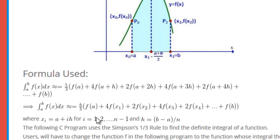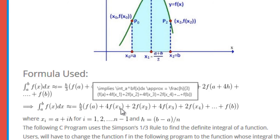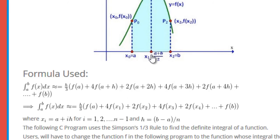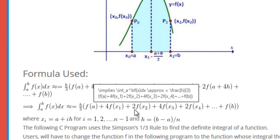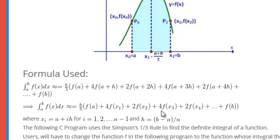Another way to look at this: you have h over 3 multiplied by the value at the lower limit, plus the value at the final limit f of b, plus the values at all subinterval points multiplied by either 4 or 2. The rule for deciding: whenever the index is a multiple of 2, multiply by 2; if the index is not a multiple of 2, multiply by 4.